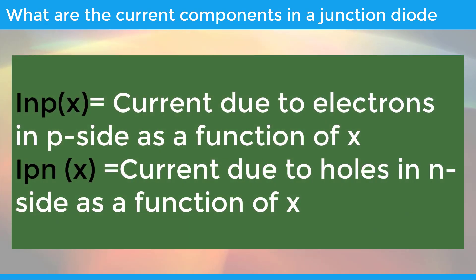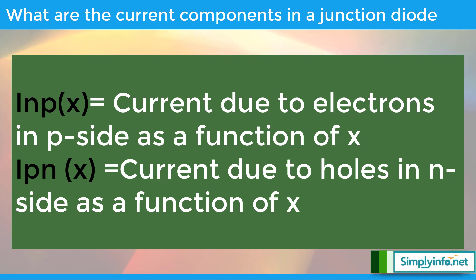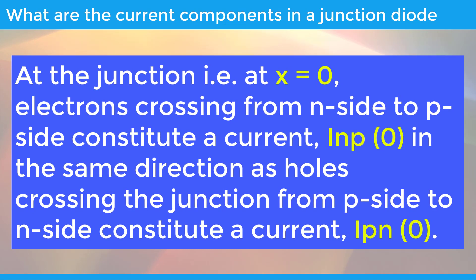This current due to holes on the N side, which are minority carriers, is denoted as IPN. If distance is denoted by X, then INP(X) is equal to the current due to electrons in the P side as a function of X. IPN(X) is equal to the current due to holes in the N side as a function of X. At the junction, that is at X equal to 0, electrons crossing from N side to P side constitute a current, that is IPN(0).